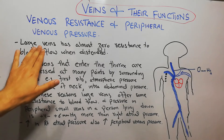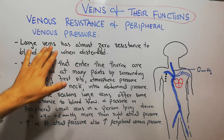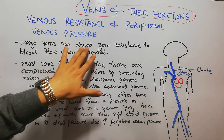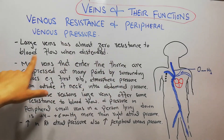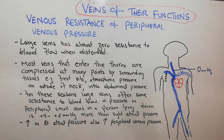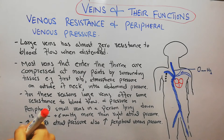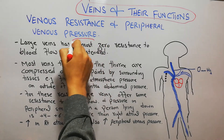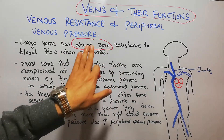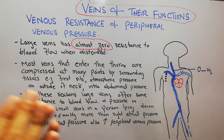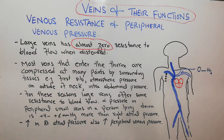The large veins have almost zero resistance to blood flow when distended. So most large veins, as they collect blood from the peripheries and bring it towards the heart, have almost zero resistance to blood flow — but only when the veins are distended.